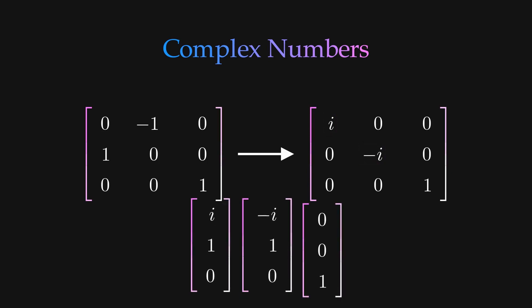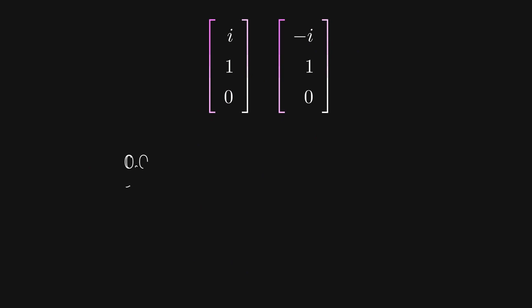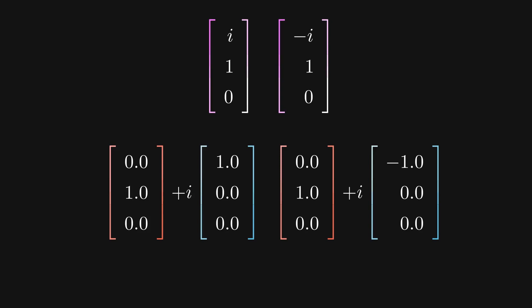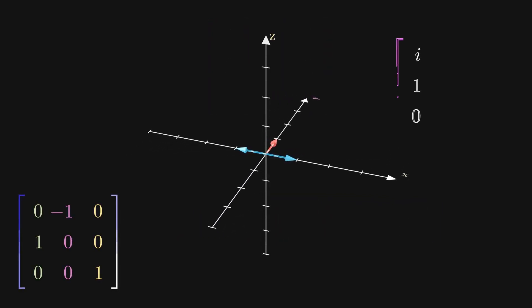In this case, two of our eigenvectors have complex entries, which is why we had a hard time seeing them in our animation. That being said, we can split up each complex eigenvector into its red real part and its imaginary blue part.